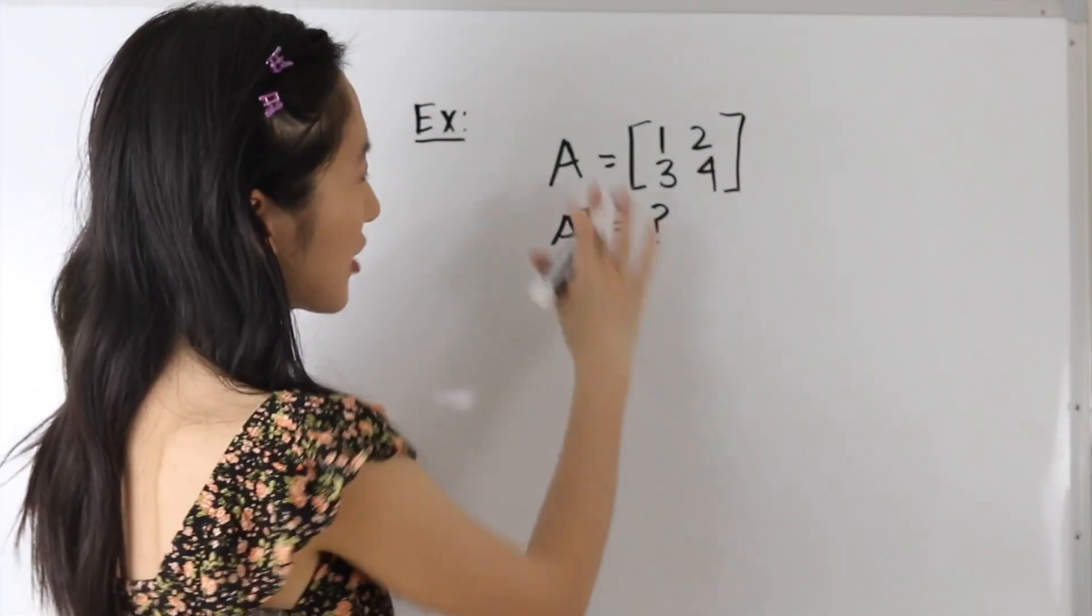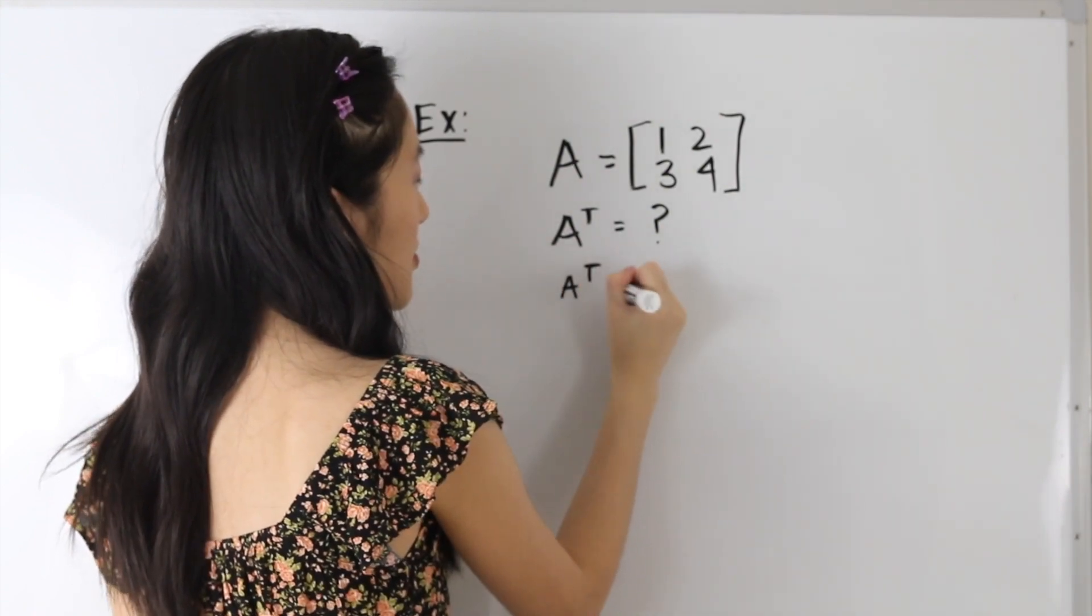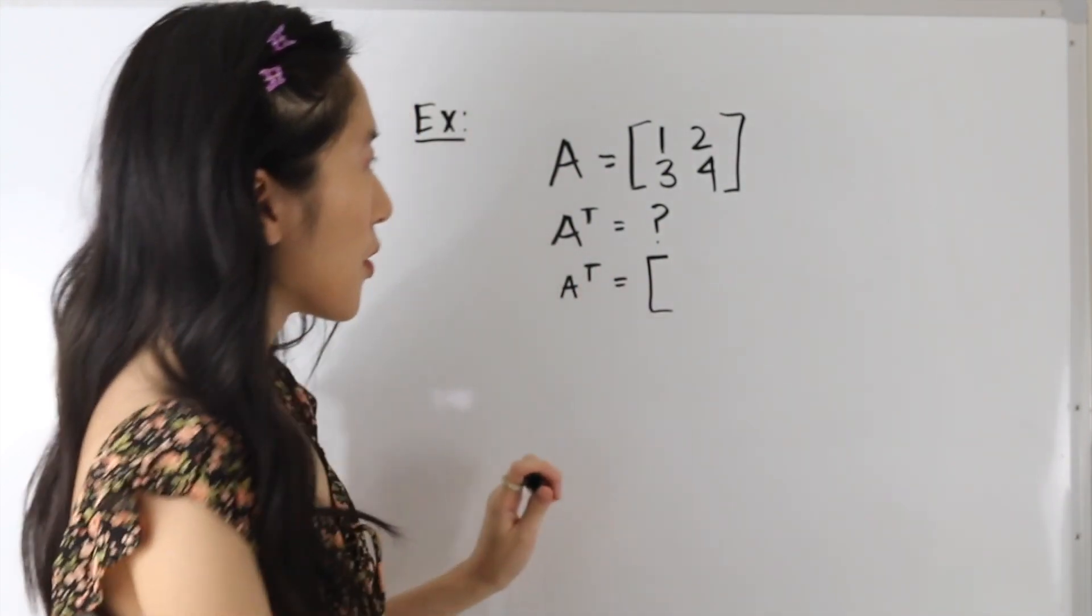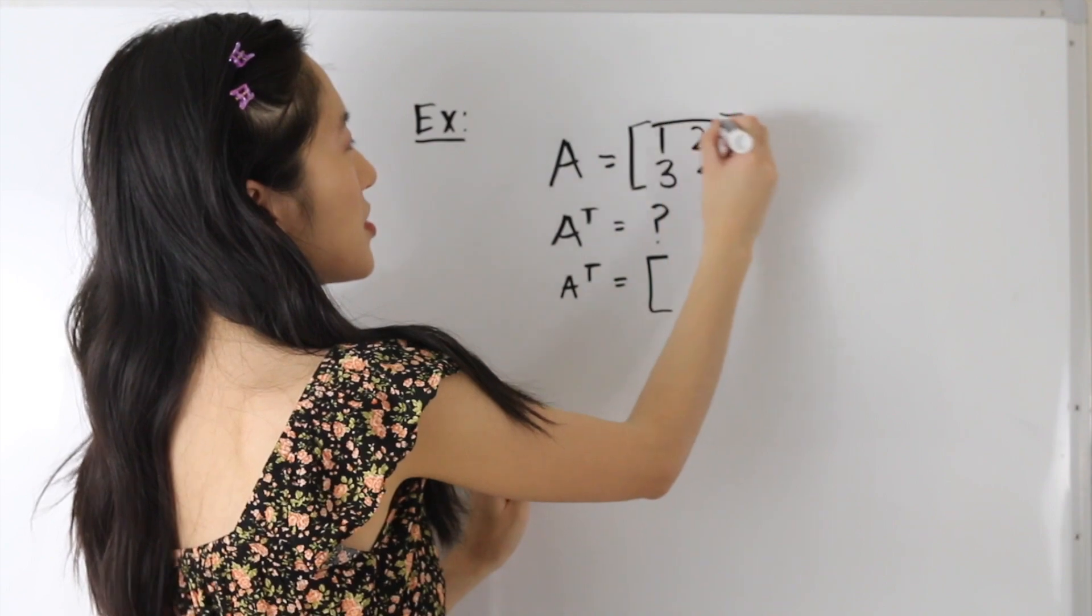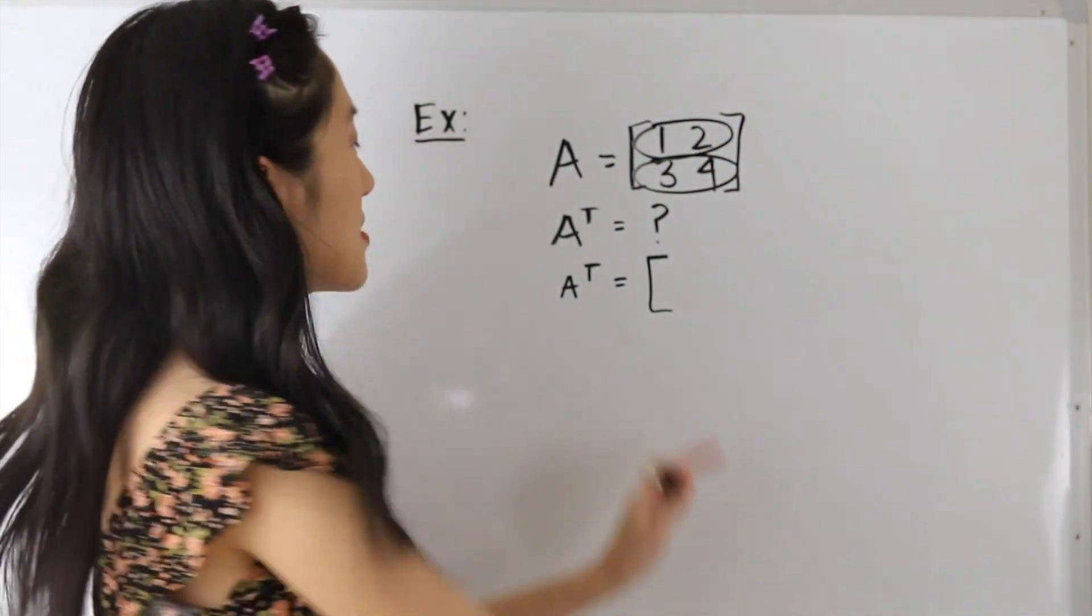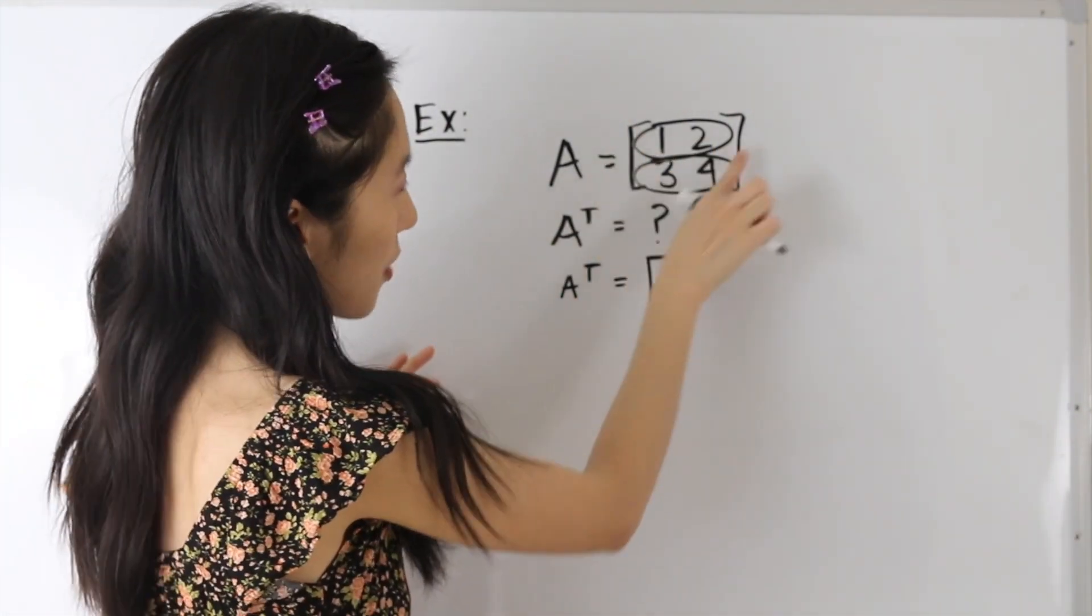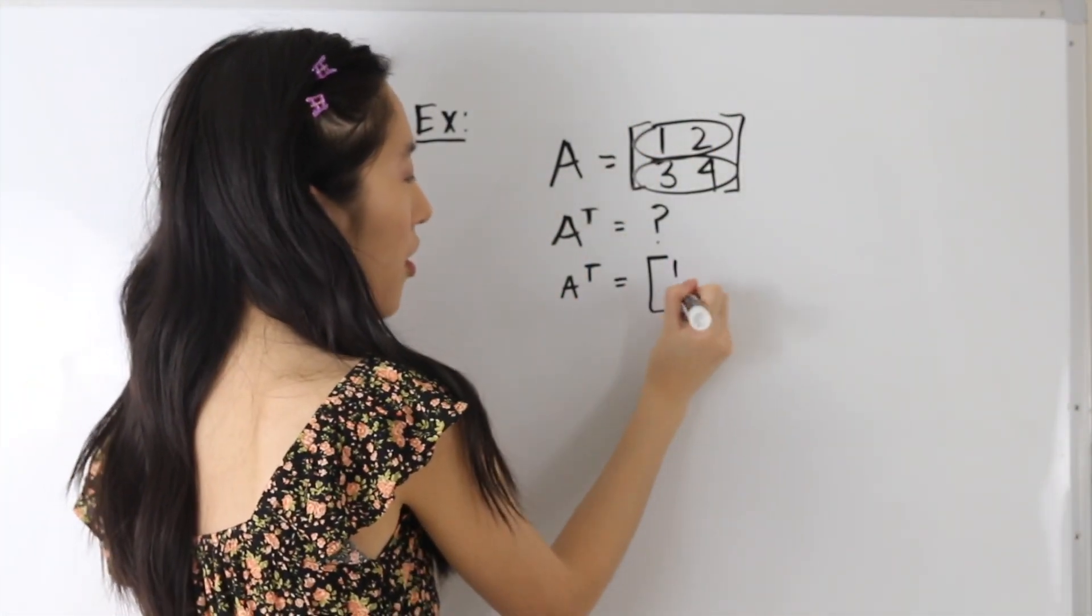So here we have matrix A, and we want to determine what its transpose is. So the rows, that is 1, 2, and 3, 4, these will become the columns of our transpose matrix. So here, 1, 2 was a row here, so now it's going to become a column.